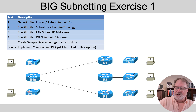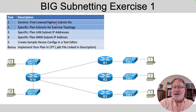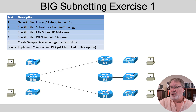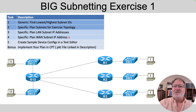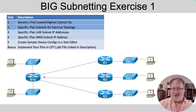What's the scenario? I give you a topology diagram and will provide more details in this video. You'll start by calculating the lowest and highest subnet IDs. I'll give you some network IDs and masks to work with, then you'll figure out where in the topology you need subnets, pick specific subnet IDs, calculate ranges of usable addresses, and pick specific IP addresses for those LANs and WANs. You'll create sample configurations in a text editor to implement those addresses in switches and routers. And as a bonus, I'll give you a Cisco Packet Tracer file so you can configure those settings in the devices.